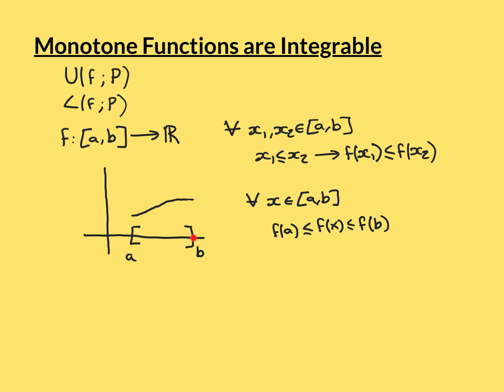And it's always going to be greater than or equal to what the endpoint a is being mapped onto, so always greater than or equal to f(a). So f(b) is an upper bound for everything the function maps you onto over this interval, and f(a) is a lower bound for the function over that interval.